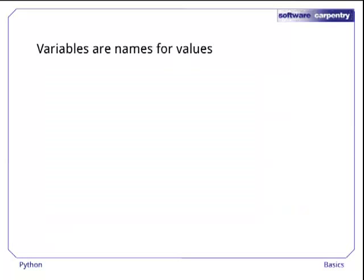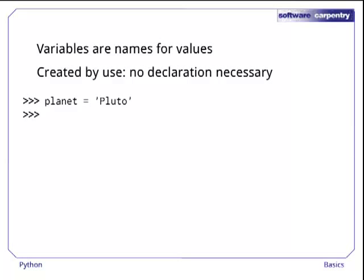Back to Python itself. Like other languages, it allows you to create variables, which are names for values. Unlike compiled languages, though, Python variables are created by use. There's no need to declare them explicitly. For example, assigning the string Pluto to the variable planet automatically creates that variable. We can then print out its value to make sure it's right.